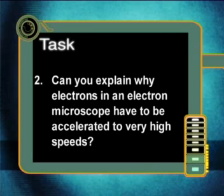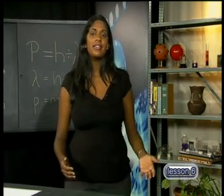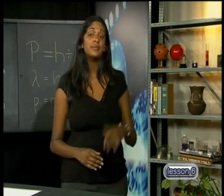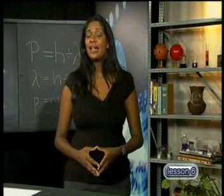Can you explain why electrons in an electron microscope have to be accelerated to very high speeds? Well, this brings us to the end of our series investigating electromagnetic radiation. We have seen that electromagnetic radiation comes from the sun and other stars and fills the universe, but also helps us explain the nature of the atom. Thanks for joining me. Goodbye.